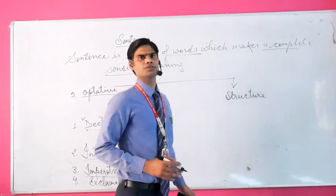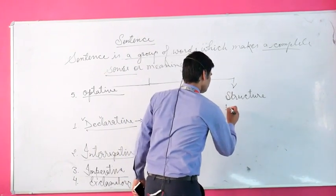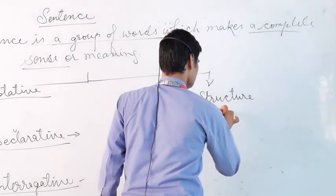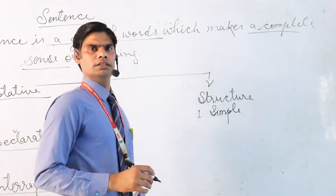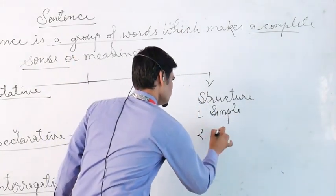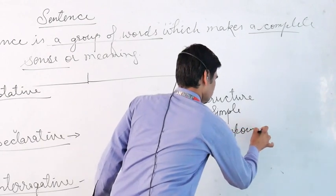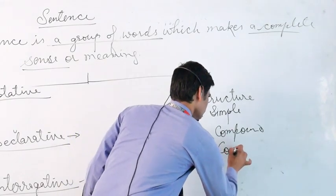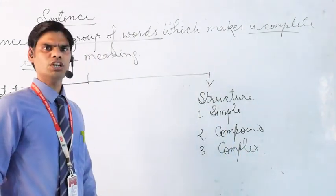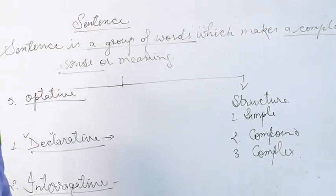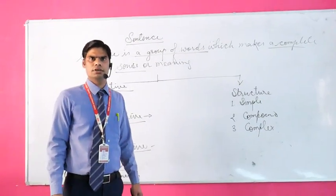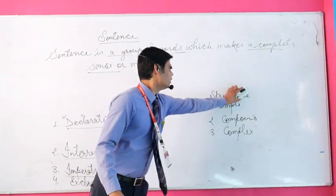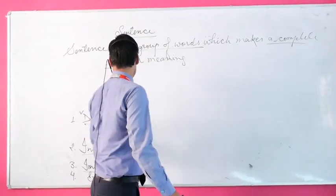Sentences based on structure can be classified into three sub-parts: the first one is simple, the second one is compound, and the third one is complex. Today we will cover and study meaning-based sentences. On another day we will talk about structure-based sentences, so mainly today we will cover the first type — sentences based on meaning.